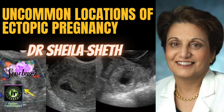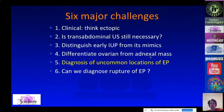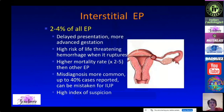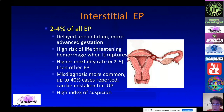Now what we're going to talk about is uncommon locations of ectopic pregnancies. The first one is interstitial ectopic pregnancy. These occur in the interstitial portion of the fallopian tube as it joins with the endometrium at the corner of the uterus.